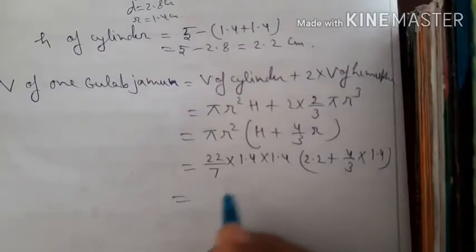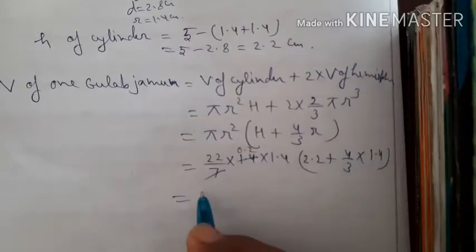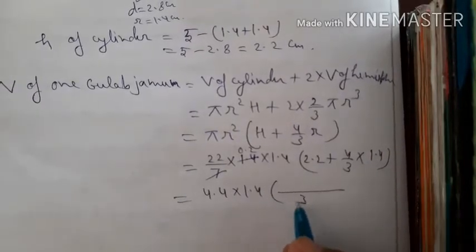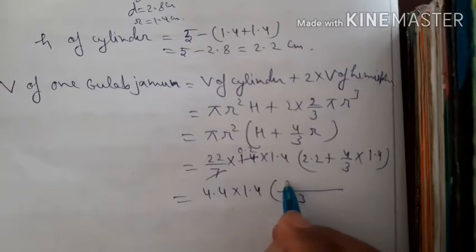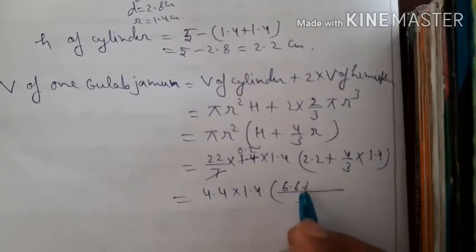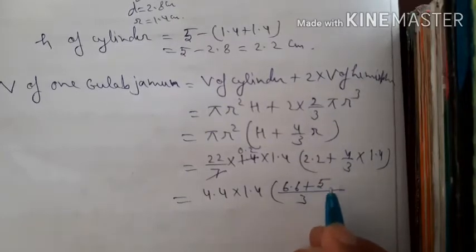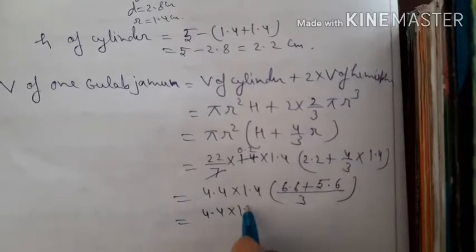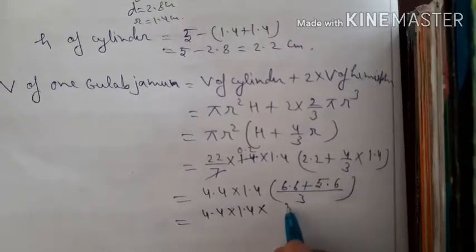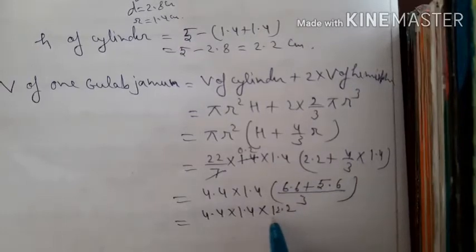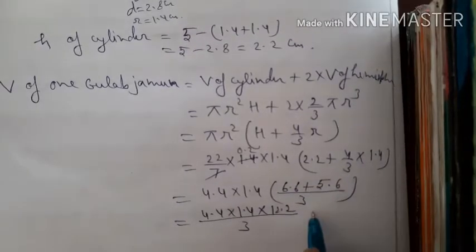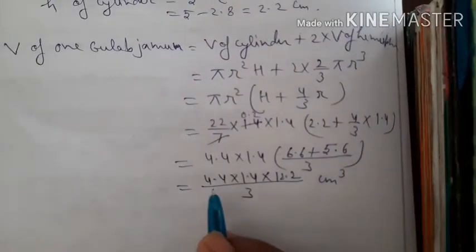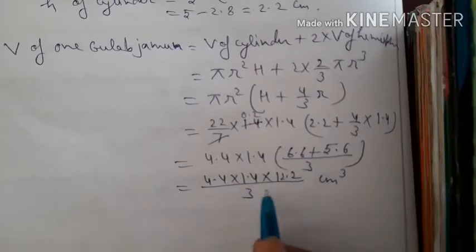Simplifying: 7 goes into 1.4 to give 0.2, so 4.4 × 1.4. Finding (3×2.2 + 4×1.4)/3 = (6.6 + 5.6)/3 = 12.2/3. Volume of 1 gulab jamun = 4.4 × 1.4 × (12.2/3) cm³.